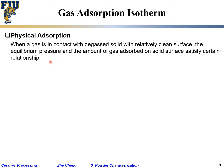In physical adsorption, when a gas is in contact with a degassed solid — a clean solid under high vacuum — you remove adsorbed species to get a relatively clean surface. The equilibrium pressure and the amount of gas absorbed on the solid surface will typically satisfy a certain relationship. You clean the surface by chemical washing, heating, and pulling a vacuum, and then when you introduce gas, some of it comes to the surface.